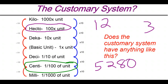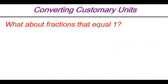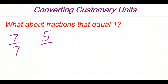So we have to come up with a different way of converting between units in the customary system, where we can be sure that the conversion we're doing is going to be correct and give us the answer we're looking for. The first thing I want to think about is: what about fractions that equal 1? Think back to fractions that equal 1 — most are things like 7 sevenths, 5 fifths, 3 thirds.